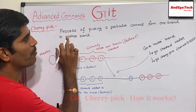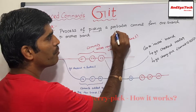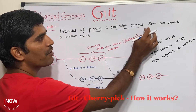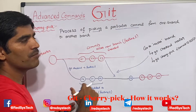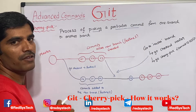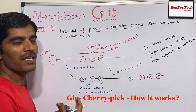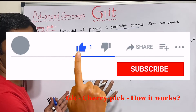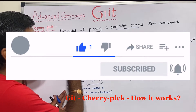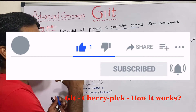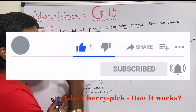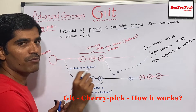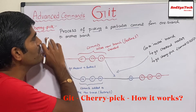Cherry pick is the process of picking a particular commit from one branch to another branch. In the previous video, we watched about rebase. Rebase is the process of moving or combining a sequence of commits. Cherry pick is the process of picking a particular commit. If I want to take one commit from one branch to another branch, then I can go for cherry pick.